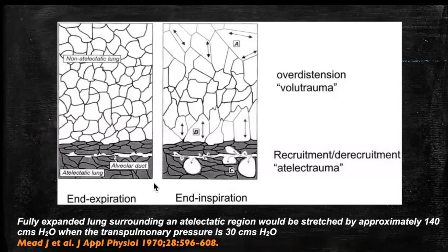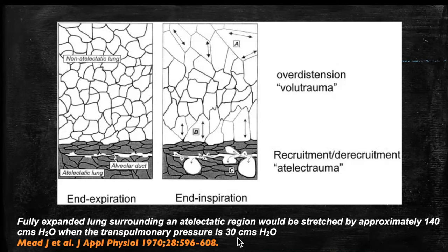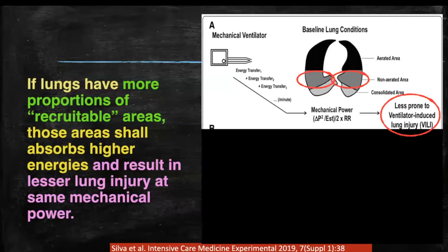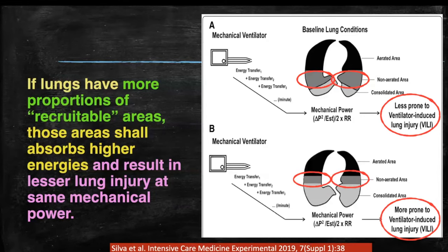The idea is to remove lung inhomogeneity by recruitment maneuvers: prone positioning, PEEP optimization, and judicious use of recruitment maneuvers make the lung more homogeneous and reduce stress raisers. If a lung has more proportion of recruitable areas, those areas absorb higher energies and result in less lung injury at the same mechanical power. Mead et al showed that applying 30 centimeters of water trans-pulmonary pressure at the junction of normal and atelectatic lung can produce a local pressure of around 140 centimeters of water through stress raisers.